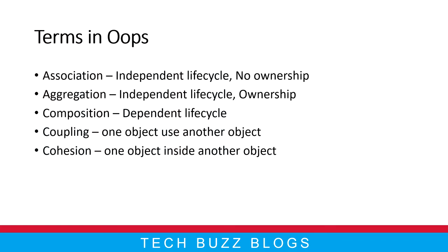Aggregation means both have an independent life cycle, but there is ownership. For example, take a mobile phone — a mobile phone has a battery. You can take the battery and put it in another mobile phone, and the same way a mobile phone can use another battery. So both have different life cycles, but to make use of the battery you definitely need a mobile phone. So the mobile phone is the owner of the battery. That is called aggregation.